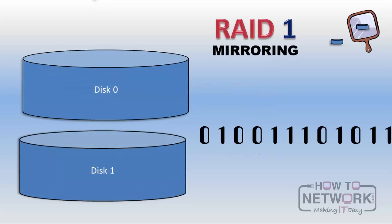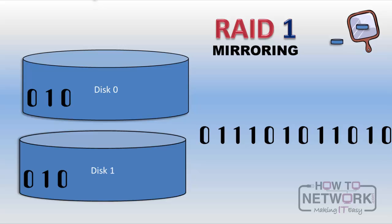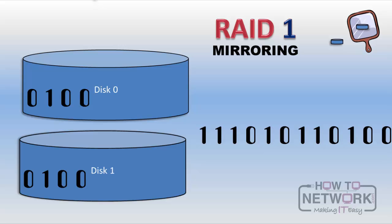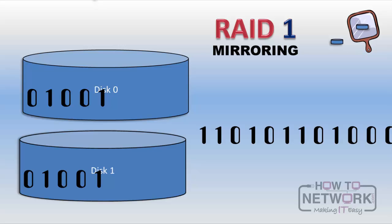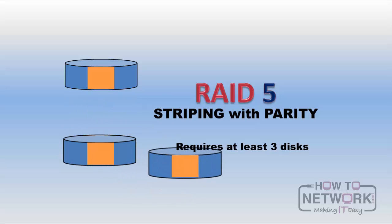RAID 1 is called mirroring. As data comes in, the same data is written to a set of two drives at the same time. If either disk in a mirrored set stops working or gets corrupted, we're still up and running because the other disk has a complete set of data. This is an expensive solution, as we need double the disk space of our data. With RAID 5, striping with parity, we get some read performance benefit from striping and some redundancy. It's not as redundant as mirroring, but it's a less expensive compromise. With RAID 5, we need at least three disks. We can lose any one of the disks and still be up and running, and when we replace the failed disk, we can rebuild the data using information from the other disks.